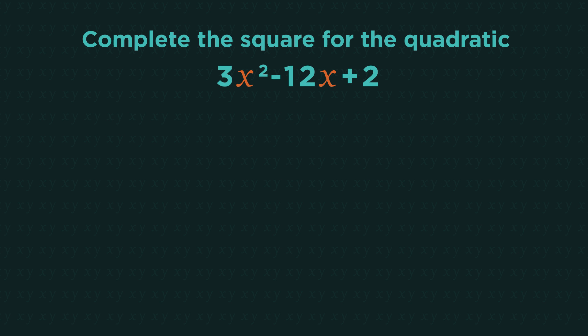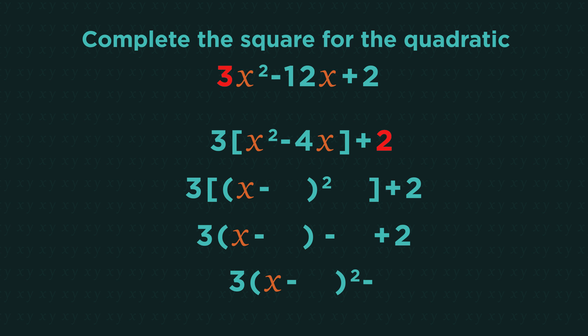So let's have a quick look at what happens when the coefficient of x squared isn't 1. I'll get you started, and then you can finish it on. So start by factoring 3 out of the 3x squared and the negative 12x to give us x squared on its own. Leave the 2 alone. Now you can complete the square.